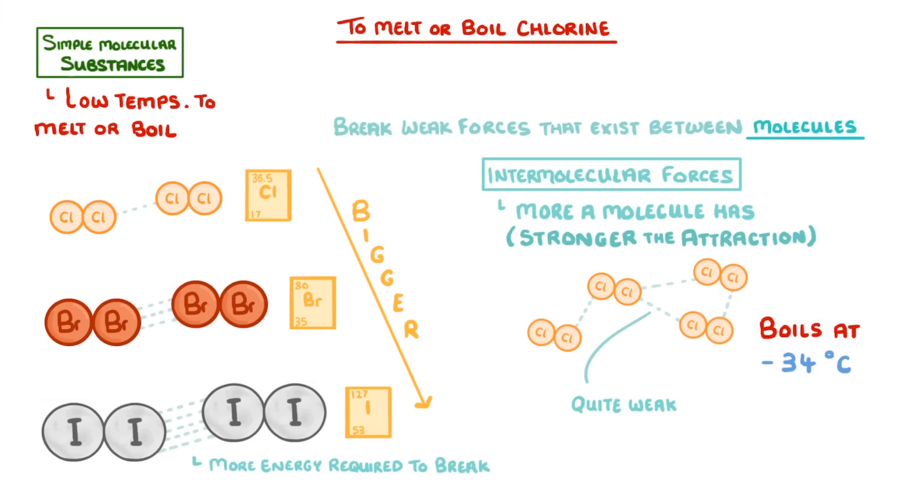Bromine has a boiling point of 59 degrees, and iodine doesn't boil until 184 degrees. There's no need to remember these specific numbers. You just need to understand that the boiling point increases as you go down the group because the molecules get larger, so there are more intermolecular forces between them.